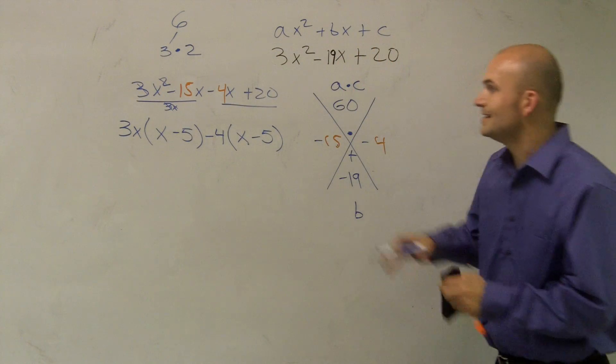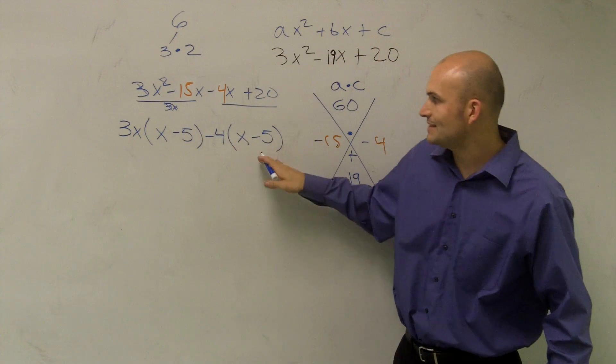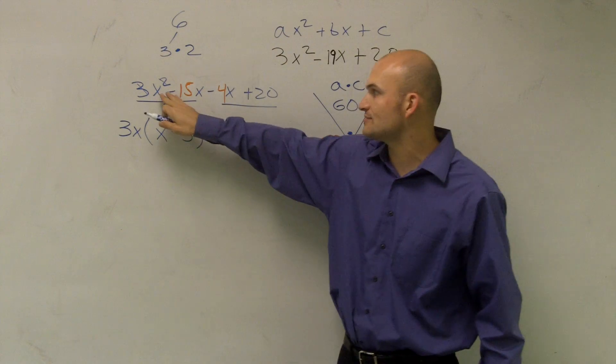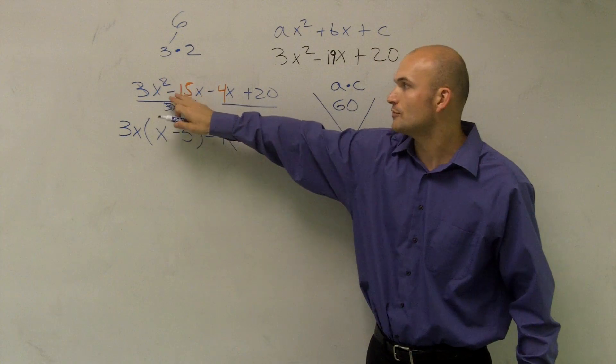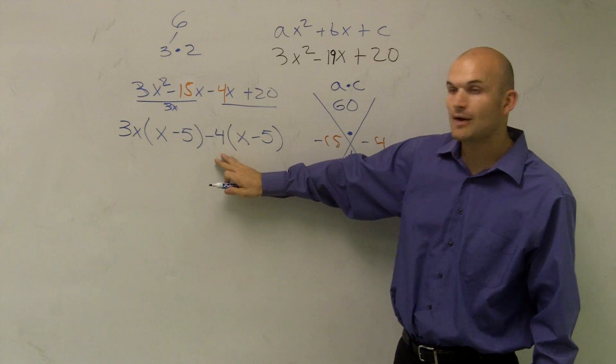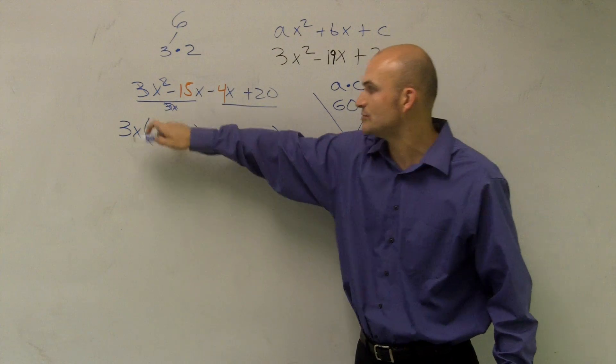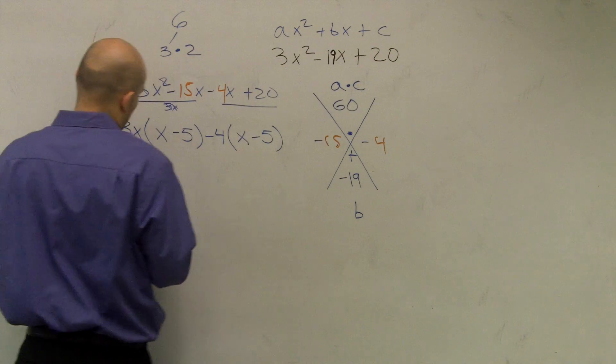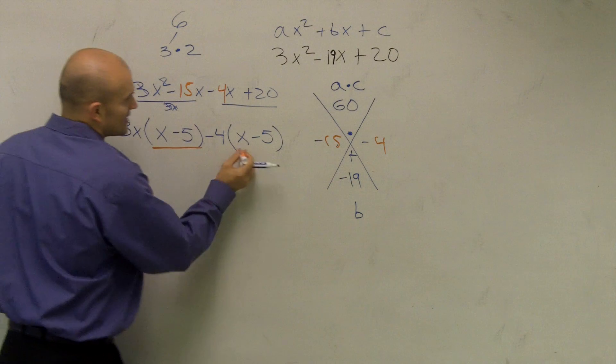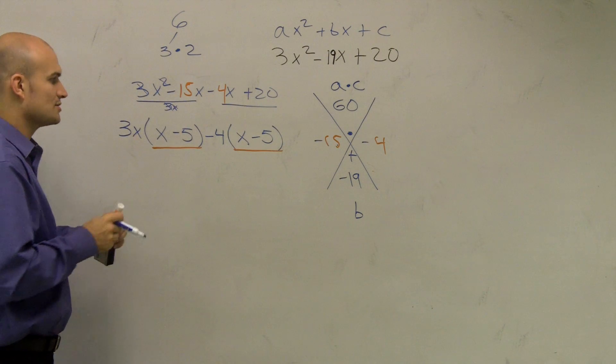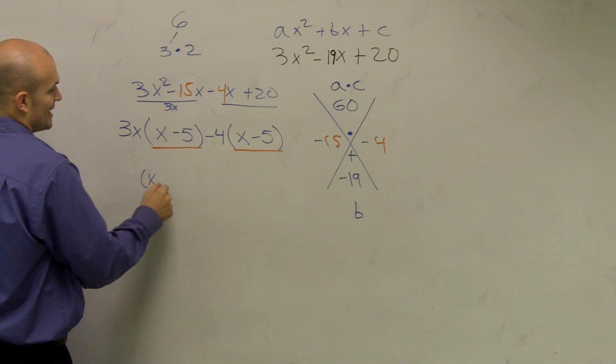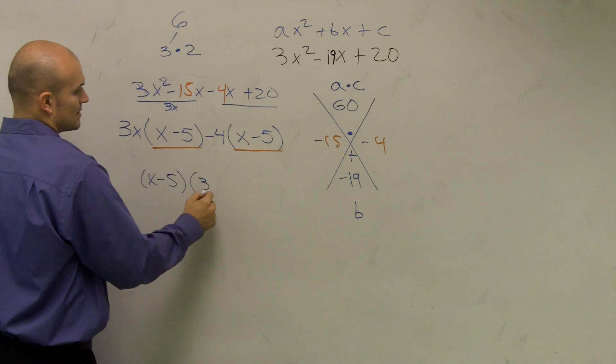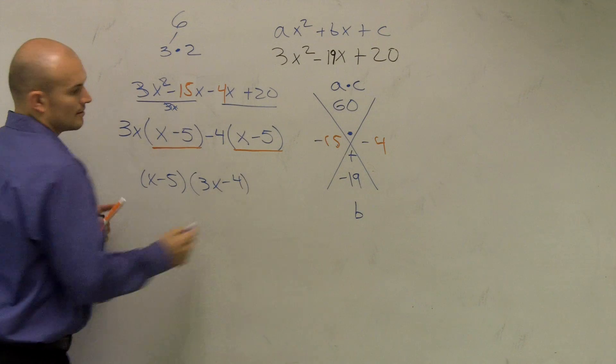So what was so important about that is now, since I have these two the same, again, we haven't changed anything. All I did was factor out common factors for these two terms and these two terms. Now what I do is factor out common terms between this term and this term. And what you notice they share is the common term of x minus 5 and x minus 5. So what I'll do is I'll factor now out an x minus 5 and I'm left with a 3x minus 4.